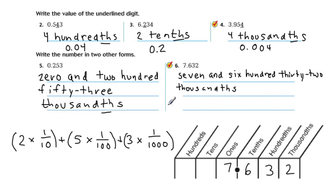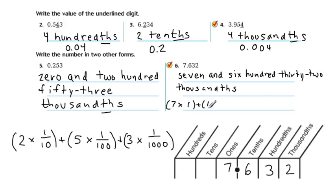I've got just enough room right here. So I'm going to represent the ones by 7 times 1. I'm going to add that to 6 times the place value, which is 6 tenths — and we represent that by 1 over 10. I'm going to add that to 3 of the hundredths.